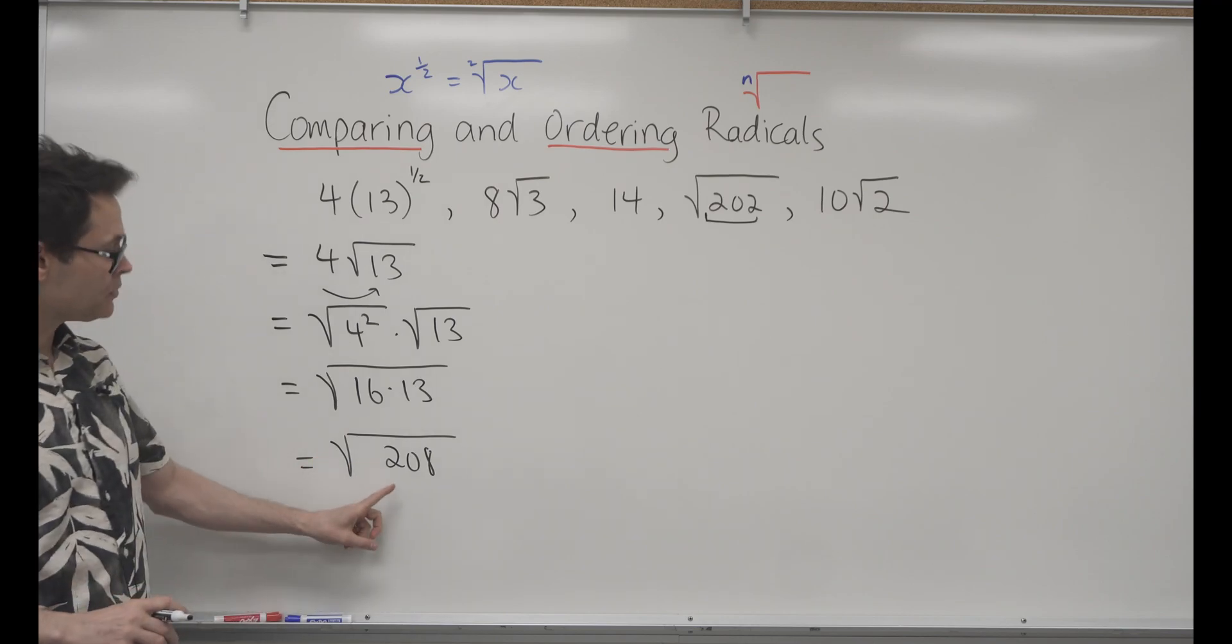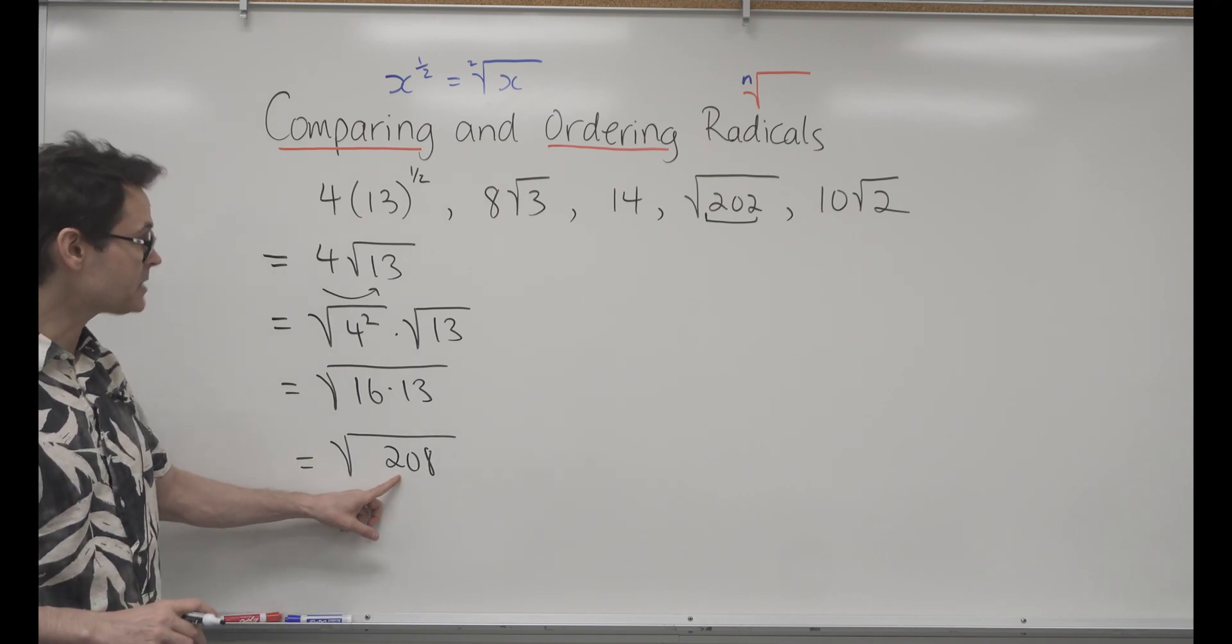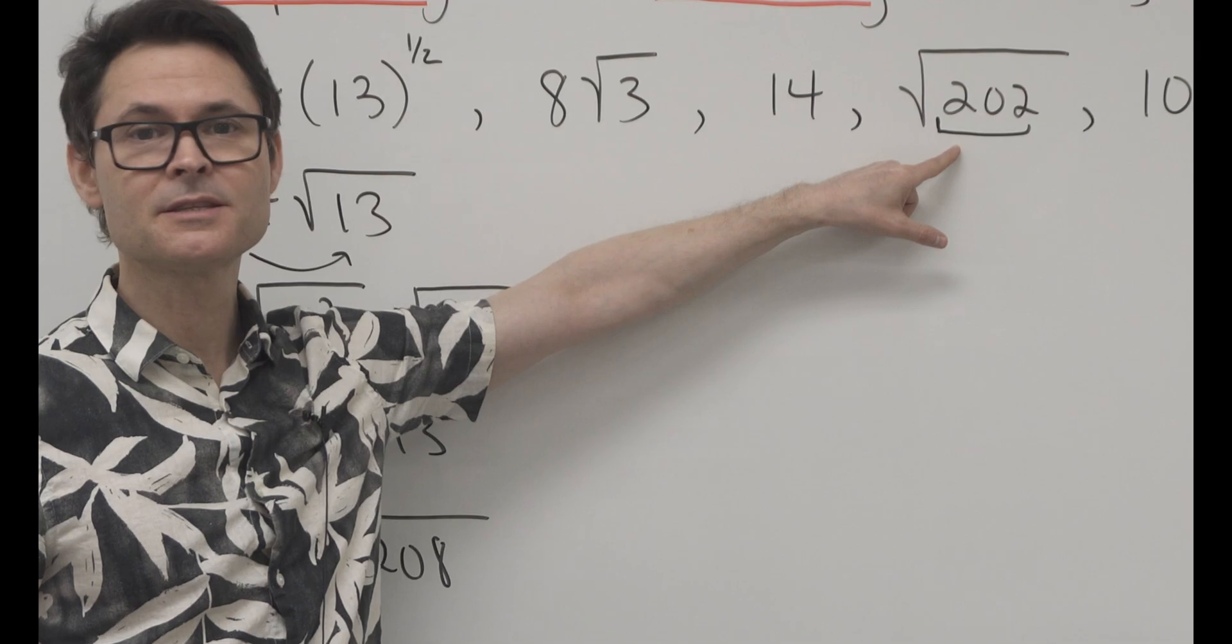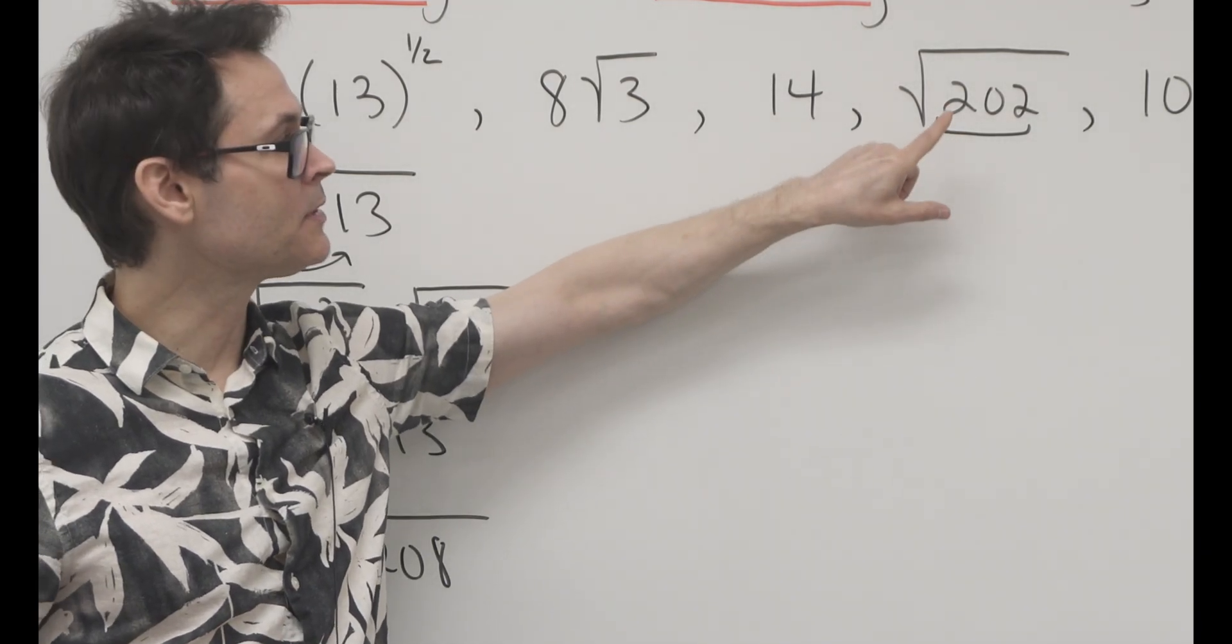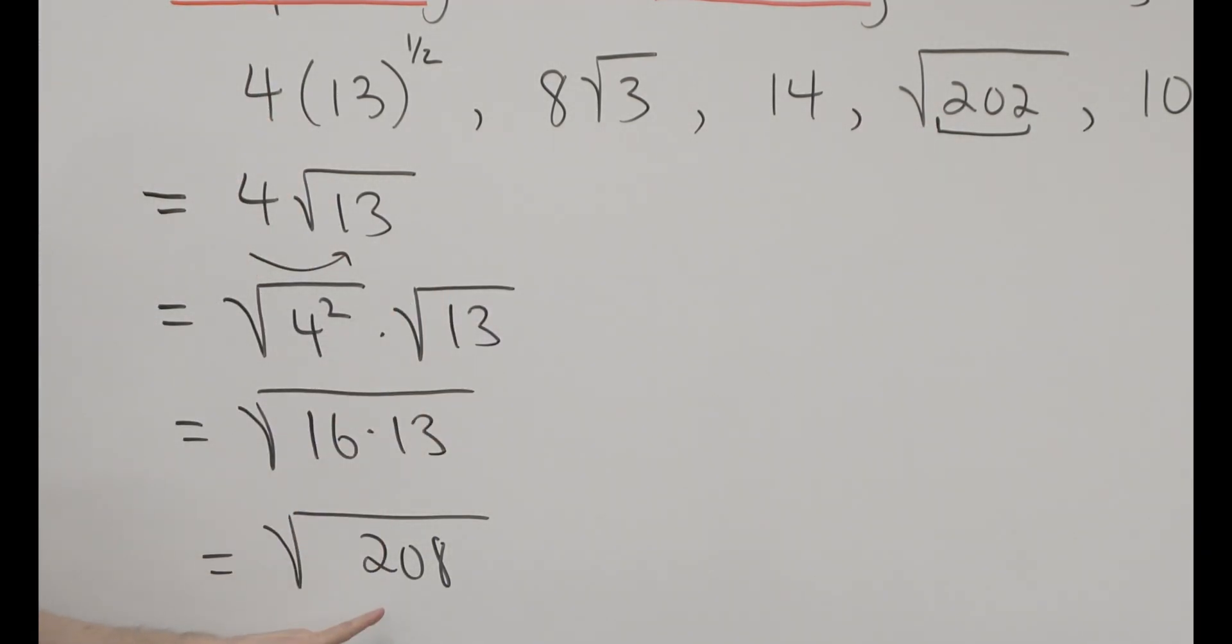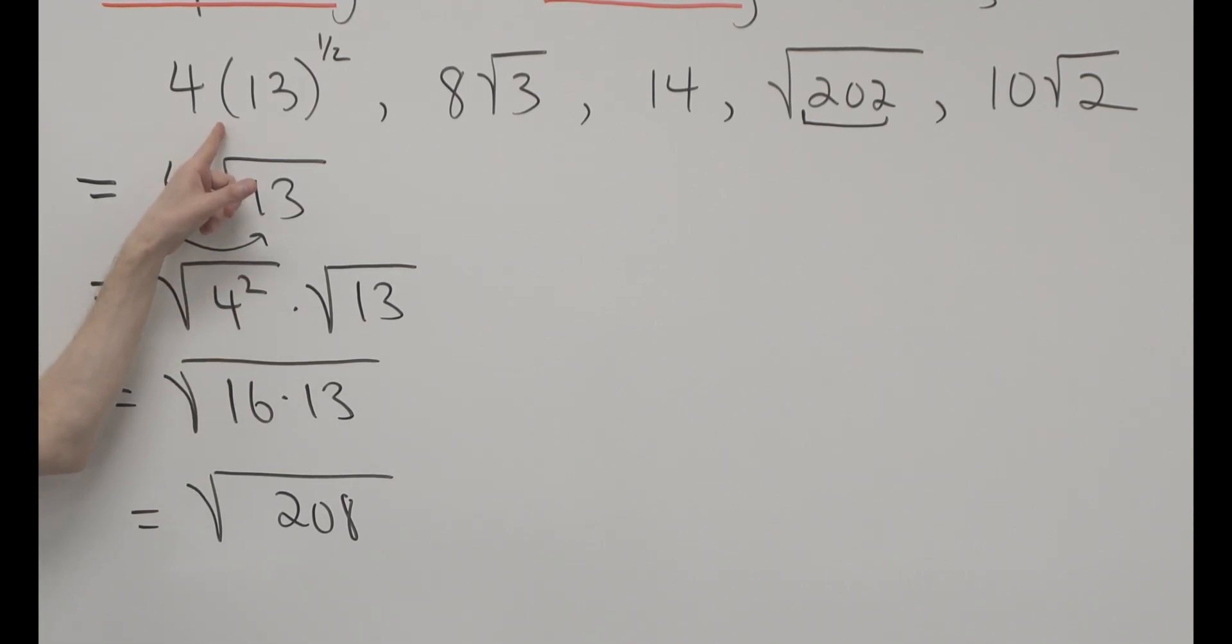What I'm going to now do, all of a sudden notice, I can compare this number to that number because they're both entire radicals, and I know that this number is smaller than this number.